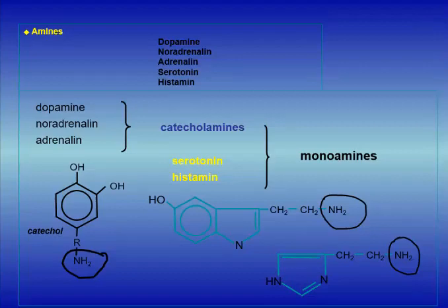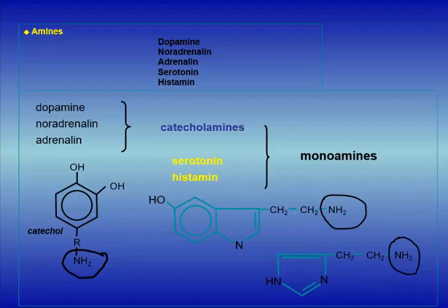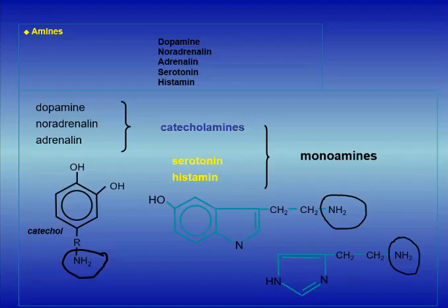Then you have serotonin with the indole nucleus — this is the indole nucleus with the amine function. And histamine is sometimes called a diamine, because in the periphery it is destroyed by diaminases, but for most people histamine is a monoamine. To avoid the problem, we also call these molecules biogenic amines.